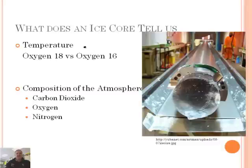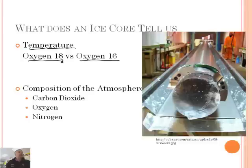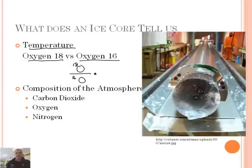They can figure out the temperature of that part of the world at that time — which is amazing. Basically, there are two kinds of oxygen called isotopes: oxygen-18 and oxygen-16. They take the ratio of oxygen-18 divided by oxygen-16. You can see tiny little bubbles in the ice core, and from this ratio they can figure out the temperature.